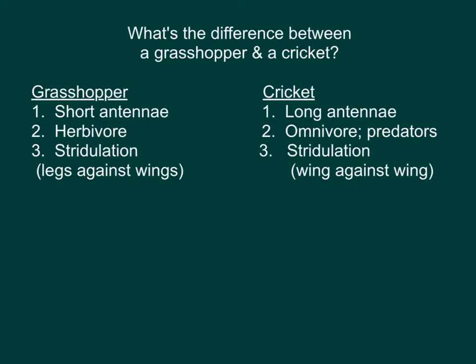Now that we're talking about crickets, let's talk about the difference between a grasshopper and a cricket. A grasshopper is going to have short antennae, whereas a cricket will have long antennae — in fact, some crickets' antennae are actually longer than their body. Grasshoppers are herbivores, but crickets can be herbivores or omnivores; some of them are even seen as predators. With stridulation: for a grasshopper, they're rubbing their legs against their wings, but for a cricket, they're rubbing the forewing against the hindwing. Just these three main differences between a cricket and a grasshopper.